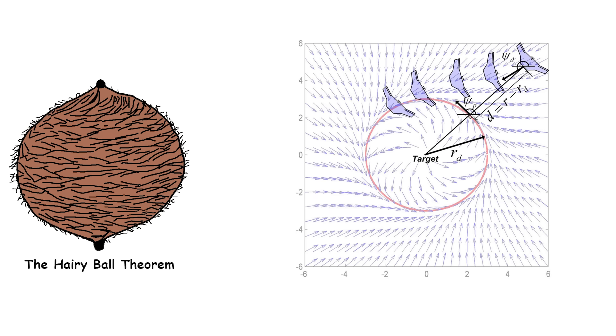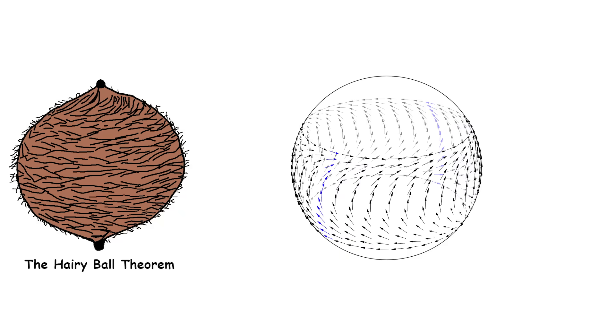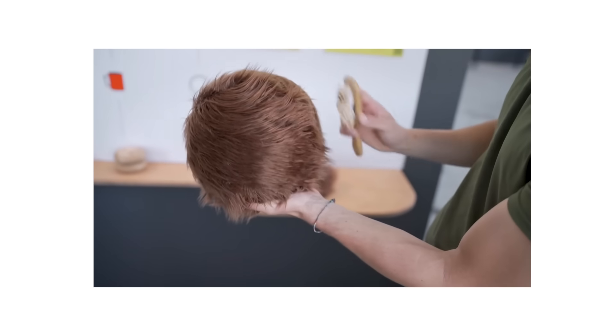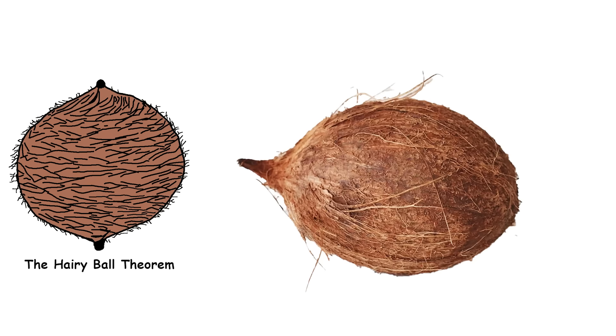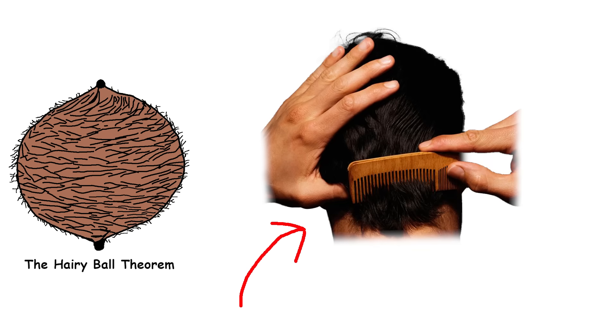In mathematical terms, it's about continuous tangent vector fields on spheres. A tangent vector field assigns a direction, a vector, to each point on a surface, like the sphere. Think of it as combing the hair at each point on the sphere in a consistent direction. When combing the hair on a fuzzy ball, like a coconut or a tennis ball, no matter how you comb, there will always be a spot where the hair stands up, just like a cow lick.